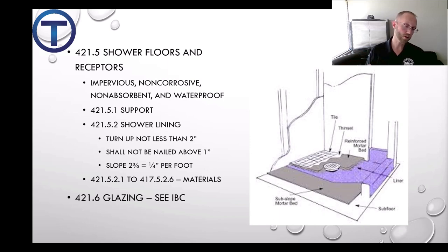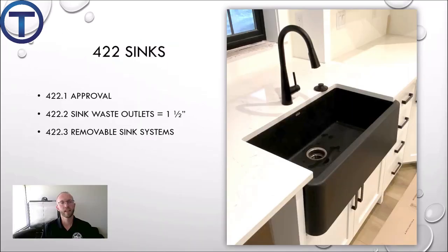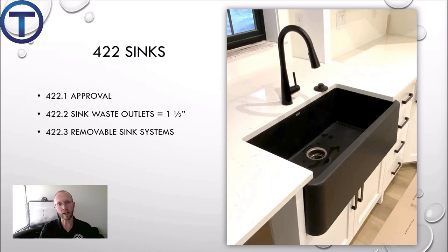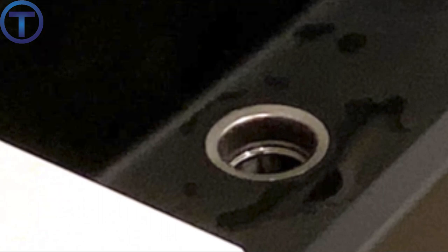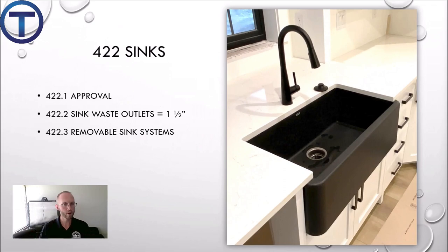4.21.6 talks about glazing — windows and doors of the shower — and directs you to check the International Building Code. 4.22 is all about sinks, whether kitchen sinks or other sinks. 4.22.1 covers approvals. 4.22.2 talks about the sink waste outlets — the drain has to be one and a half inch minimum — and it must have a strainer or crossbar to restrict the clear opening of the waste outlet, same as with lavatories. Moveable sink systems are mentioned in 4.22.3.